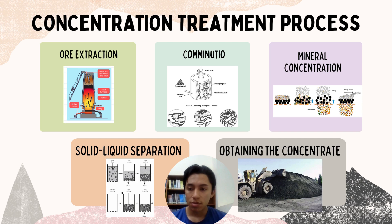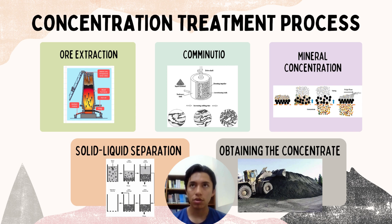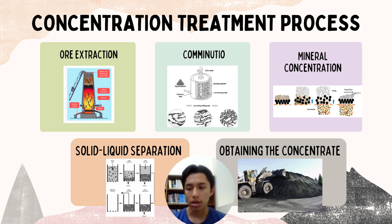The third step is mineral concentration, which is the key stage of the treatment process. It allows the elimination of sterile elements or gangue, as well as obtaining what is called the concentrate, which is the intermediate state between the natural state and the pure product. The liquid-solid separation consists of separating the valuable mineral from the pulp by processes such as flotation, where the froth bubbles generated carry the sulfide minerals with them to the surface, making it possible to obtain an increasingly concentrated product.